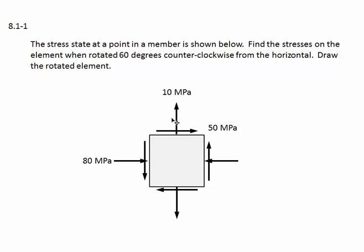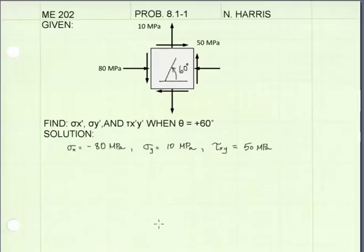Here's the stress element with normal stresses and shear stresses shown. The first thing I've done is found the stresses sigma x, sigma y, and tau xy that we'll be using. Sigma x is the stress in the x direction; it is negative 80 megapascals. The negative sign comes because the 80 megapascals is a compression stress as shown by the arrows. Sigma y is a positive 10 megapascals, and tau xy is a positive 50 megapascals, because the arrows are shown in the positive direction.